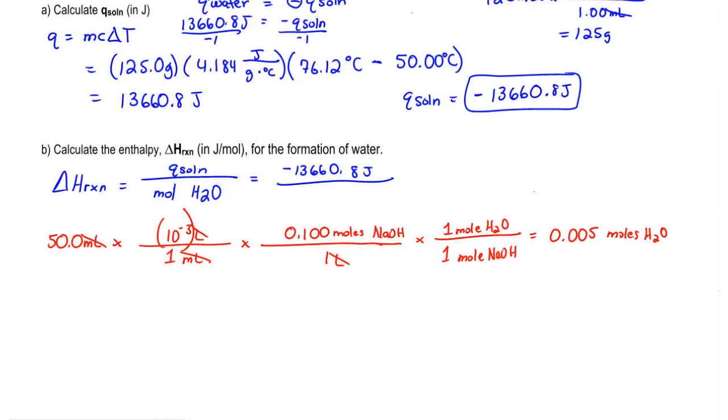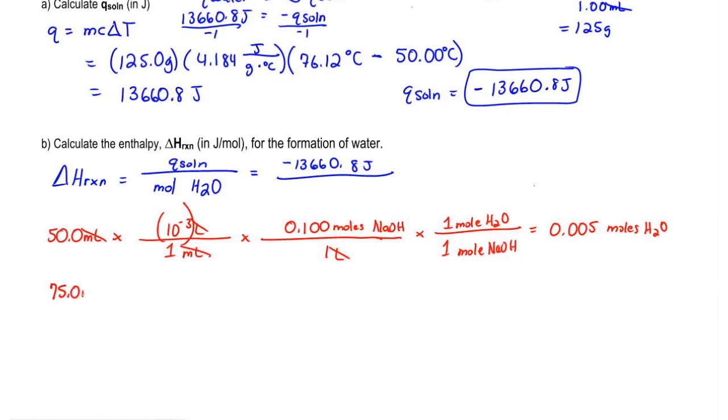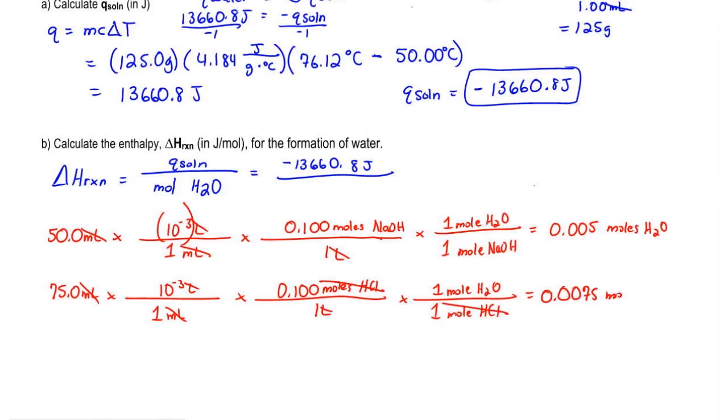Now we have to do the same thing with HCl. So we have 75 mLs of 0.100 molar HCl. We change the mLs into liters first, then we multiply it times the molarity. For every 1 mol of HCl, we have 1 mol of H2O. Liters cancel out, moles cancel out. So we have 0.0075 moles of water.